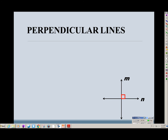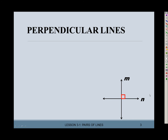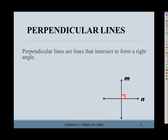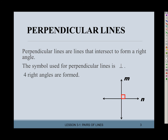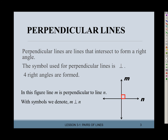We also have perpendicular lines. Perpendicular lines are lines that intersect to form a right angle — remember, there are 90 degrees in a right angle. The symbol for perpendicular lines is this upside-down capital T. Four right angles are formed when you have perpendicular lines — not just one, but all four of those angles are right angles. If line M is perpendicular to line N, we write M is perpendicular to N.